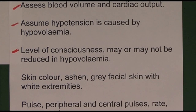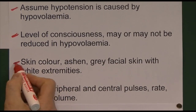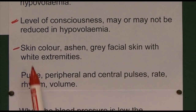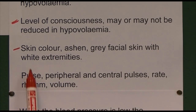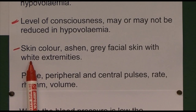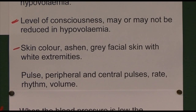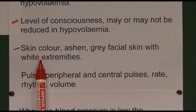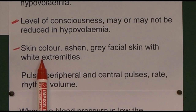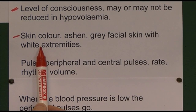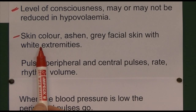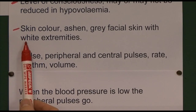Level of consciousness may or may not be reduced in hypovolaemia, so it's not necessarily a definitive indicator of blood loss. Skin colour will usually be pale — an ashen grey colour, with white and cold extremities. In patients with darker skin, look particularly at the lips, conjunctiva, fingernails, palms of the hands, and soles of the feet. The perfusion of the lips is a good indicator. The skin will be cold regardless of colour due to peripheral shutdown, and because of sympathetic stimulation, the patient may also be sweating — cold and clammy.